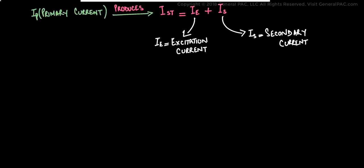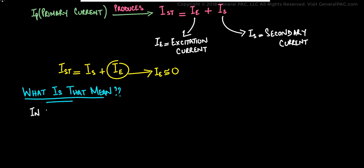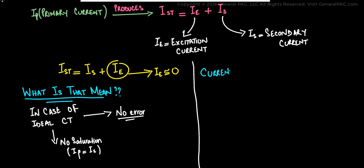The total secondary current as shown by IST is equal to the secondary current only when IE is equal to zero. Now what does that mean? What we are trying to say here is that if we model an ideal current transformer where there is no error or there is no saturation, where the primary current is equal to the secondary current. In this case, we are saying that IE is zero and IST is equal to IS.